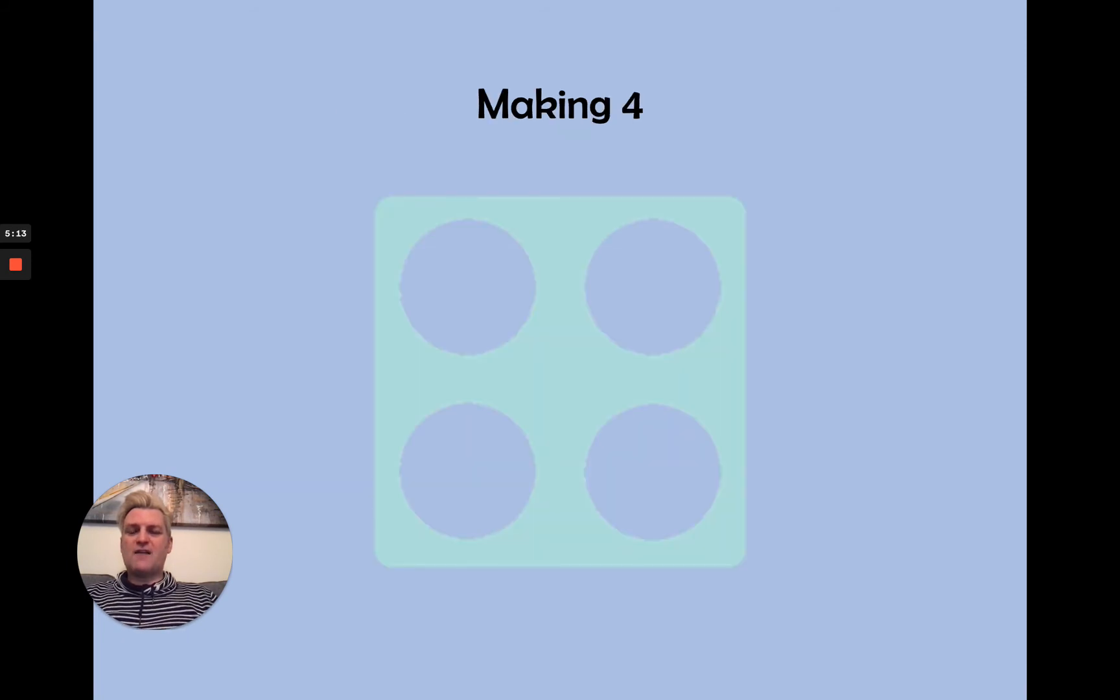Now, have a go at trying to make four. Here is four on the numicon. And we know it's four because it's got those four circles in that pattern on a dice or a domino. And we're going to try and make four using some other pieces of numicon. And I'm going to start with a two.